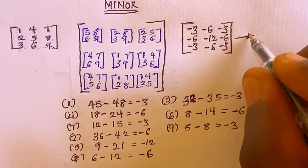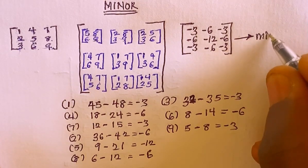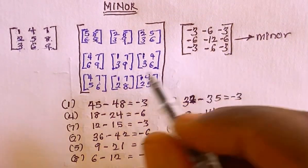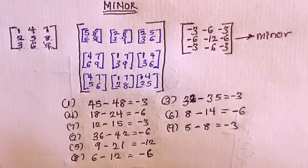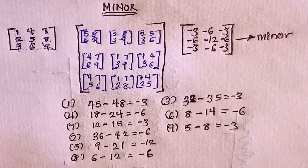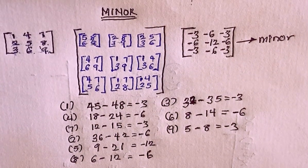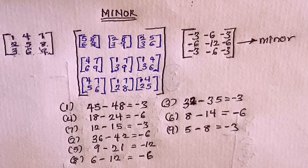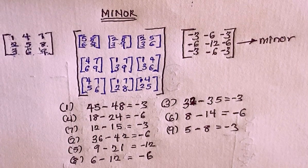So this matrix of computed values is known as the minor of the original matrix. If you find this video helpful and easy, don't wait to click on the description button and don't forget to share this video with your friends. Thanks for watching.